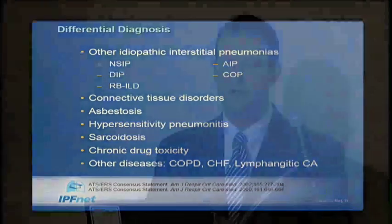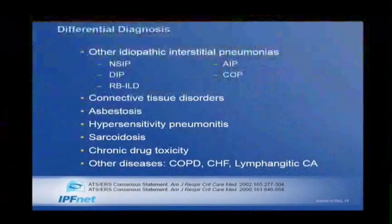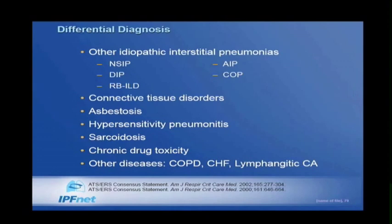A study by National Jewish estimated that about 10% of patients who come to lung transplant at their facility actually have chronic hypersensitivity pneumonitis instead of IPF. Other differentials include sarcoidosis, chronic drug toxicity — I have patients who have taken macrodantin for many years with chronic toxicity — and other diseases including COPD, heart failure, and lymphangitic spread of carcinoma.